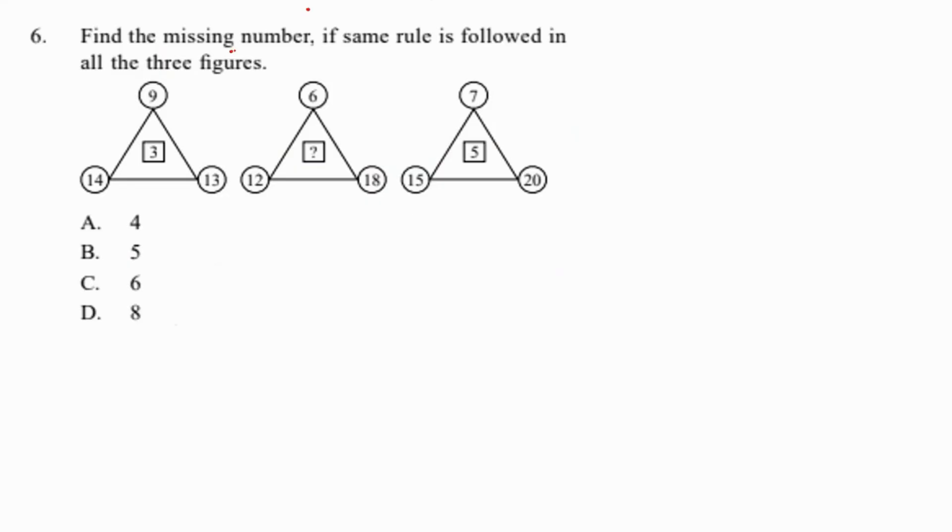A pattern question where you have to find the missing number in triangles. The pattern is: bottom left plus bottom right, divided by the top number equals the middle. For example, 14 plus 13 equals 27, divided by 9 equals 3. Similarly, 15 plus 20 equals 35, divided by 7 equals 5. So 12 plus 18 equals 30, divided by 6 equals 5. Option B is the answer.